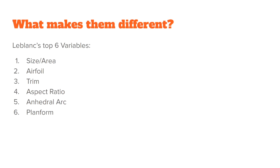John LeBlanc, VP at Performance Designs and one of their parachute designers, says there are essentially six top variables that make a difference in how a parachute flies. He also adds that there's some magic that goes into it too. The top six variables are: the size or area of the parachute, airfoil type, the trim of the parachute, the aspect ratio, the anhedral arc, and finally the plan form.